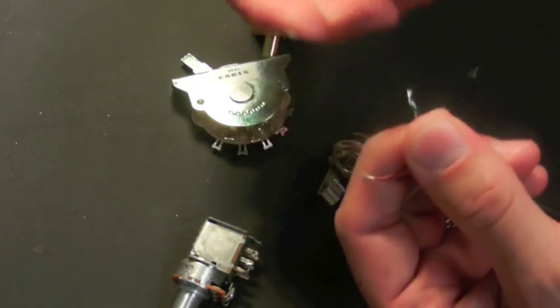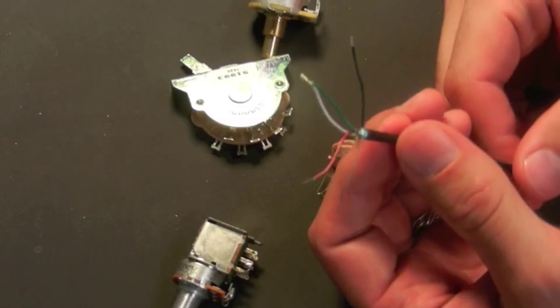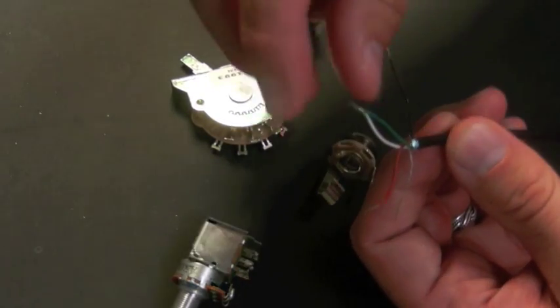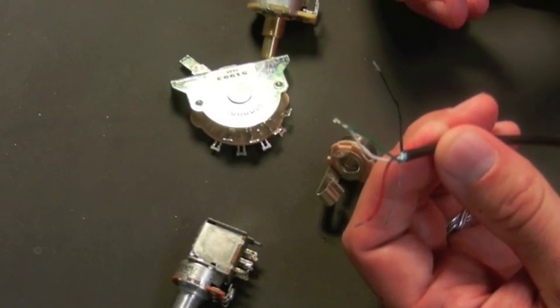Twist them together, make sure they're soldered. If you're just installing it as a full humbucker, make sure that connection is soldered. Make sure it's also taped off so it doesn't come into contact with anything else.